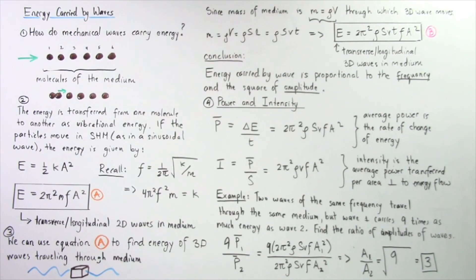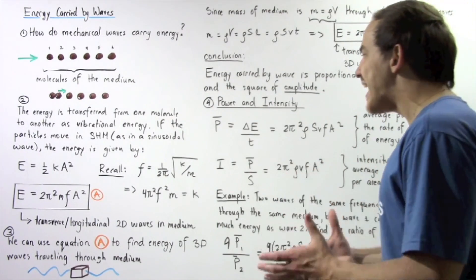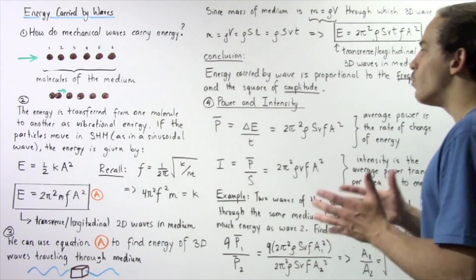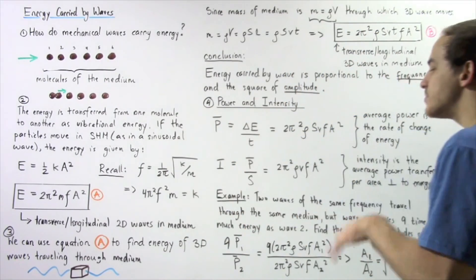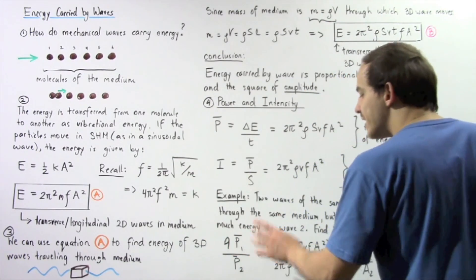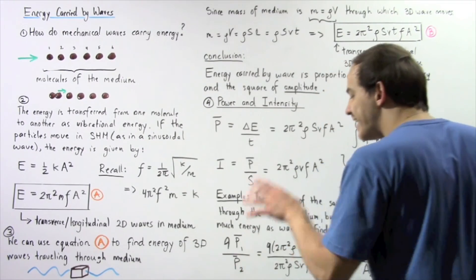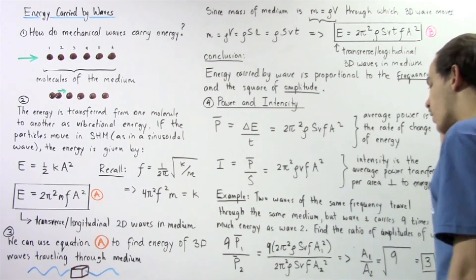Two waves of the same frequency travel through the same medium, but wave one carries nine times as much energy as wave two. We want to find the ratio of the amplitudes of the waves — essentially the ratio of the power of wave one to the power of wave two. We are given that the power of wave one is nine times that of wave two, so P1 divided by P2 equals 9.